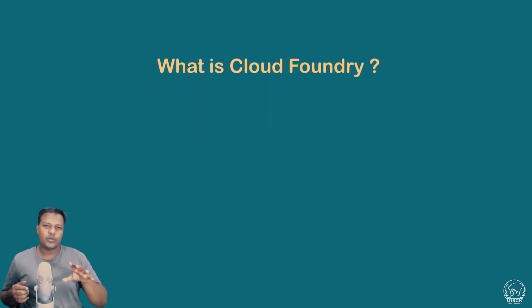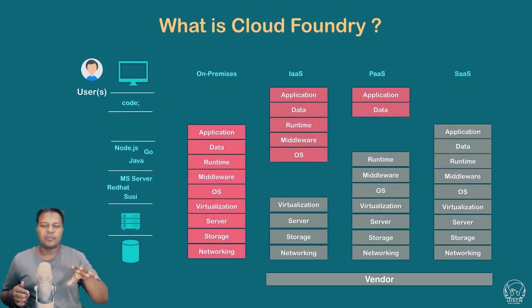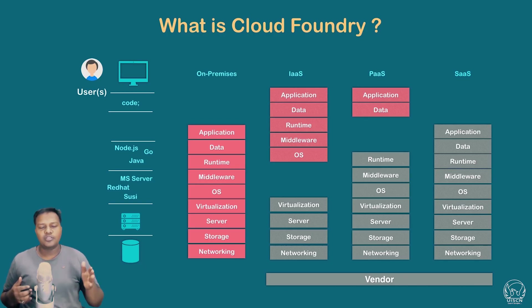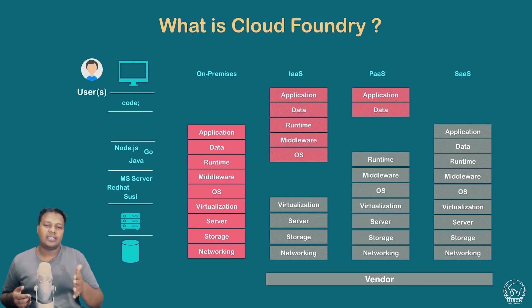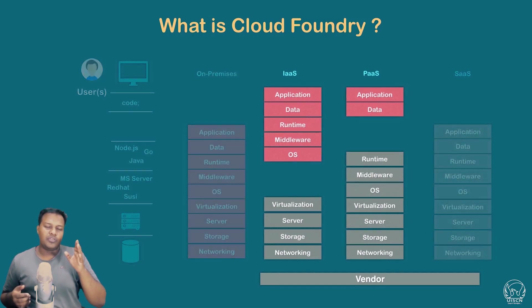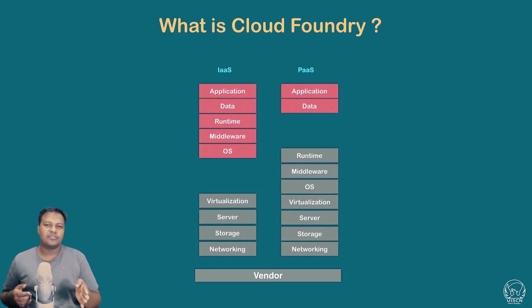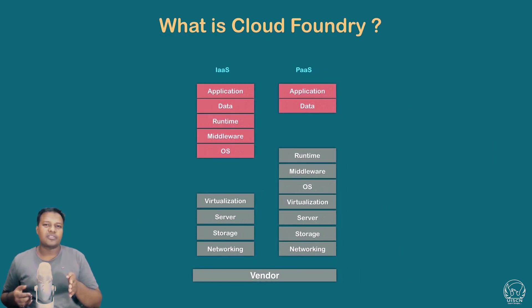If we look into the previous section diagram, we have different models for a cloud provider: Infrastructure as a Service (IaaS), Platform as a Service (PaaS), and Software as a Service (SaaS). Our focus here is on Infrastructure as a Service and Platform as a Service.